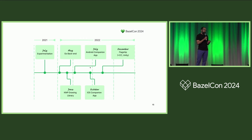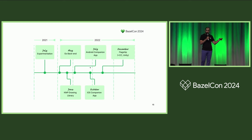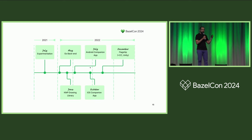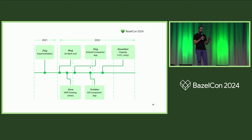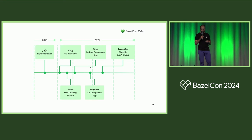From then on, the rest of our services were migrated over the course of that year, starting from services with the fewest internal dependencies to the ones with the most. At the end was our flagship app that has hooks basically everywhere.